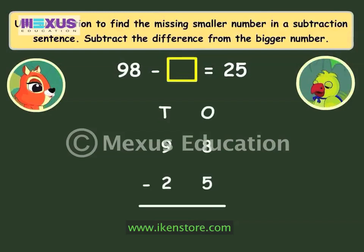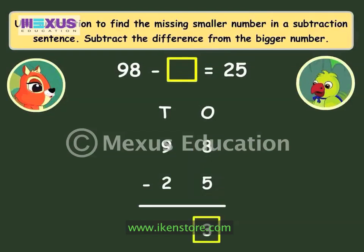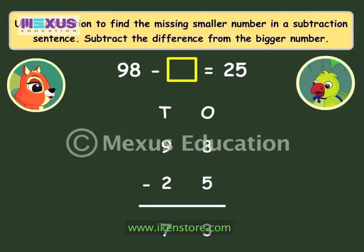Yes, we need to subtract 25 from 98. 8 minus 5 is 3, 9 minus 2 is 7. So the missing number is 73.